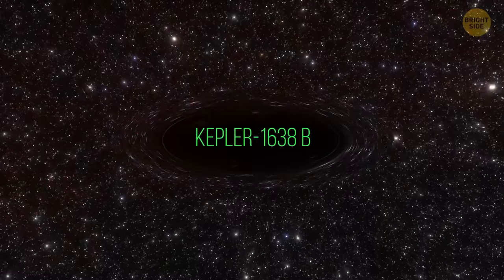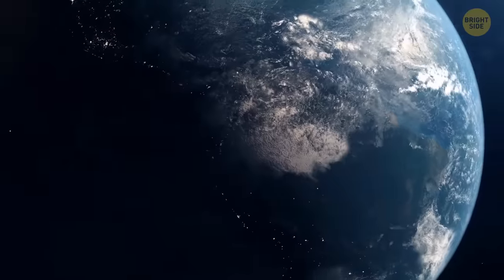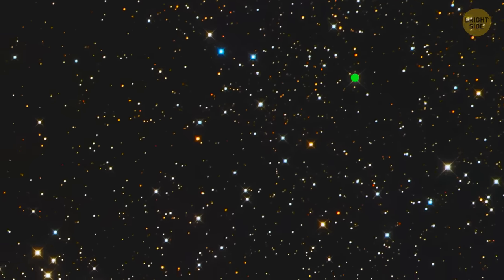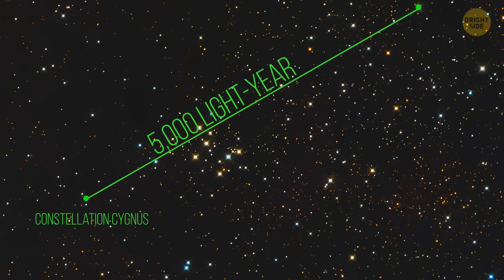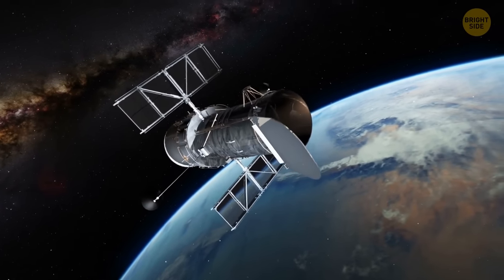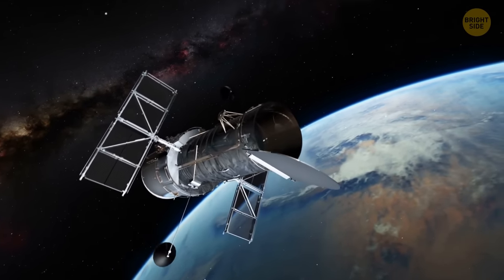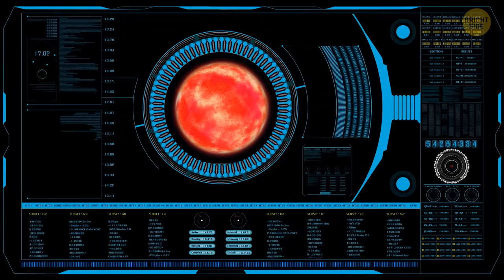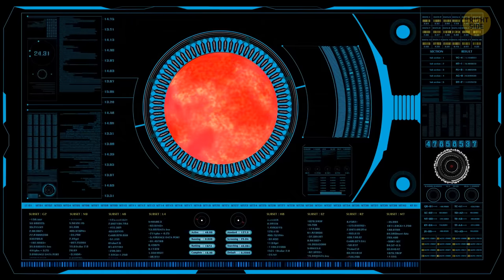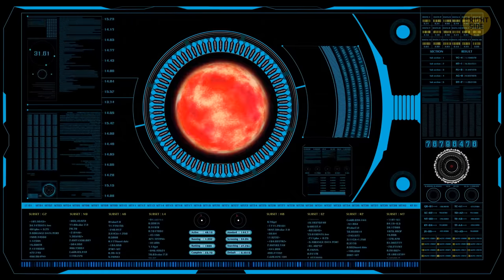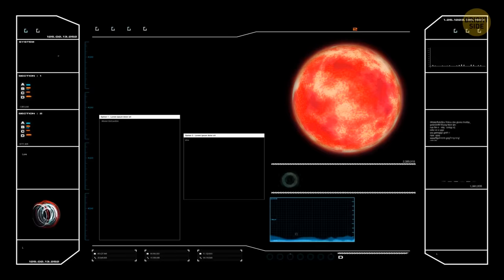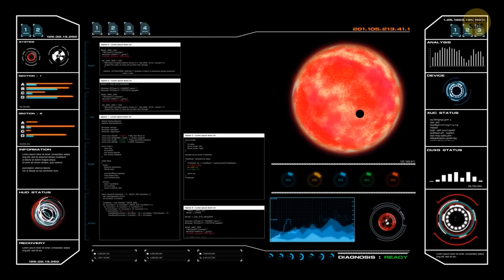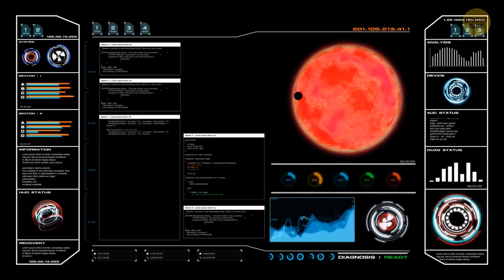Kepler-1638b. This exoplanet is located about 5,000 light-years from Earth in the constellation Cygnus. It's also located in the habitable zone of its star. It was discovered in 2020 by the Kepler spacecraft through the process called transiting. They basically take a bunch of photos of the star at different times.